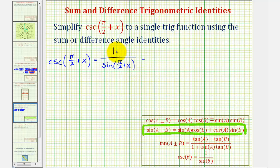So using the identity for sine, we can write this as one divided by sine a times cosine b. Notice because we have a sum here, we also have a plus sign here. So we'll have sine a times cosine b plus cosine a times sine b.